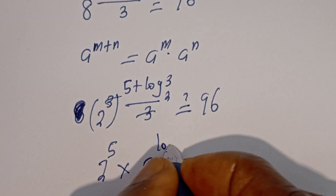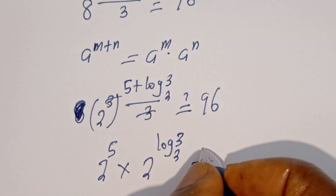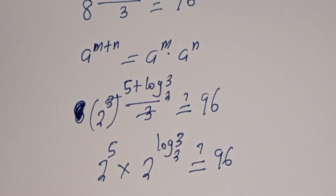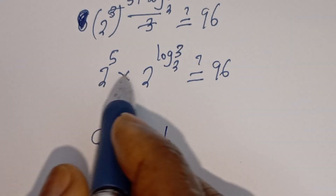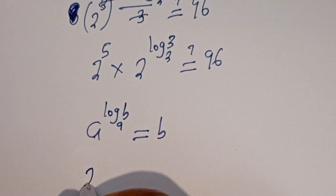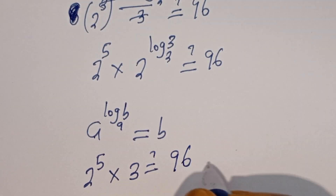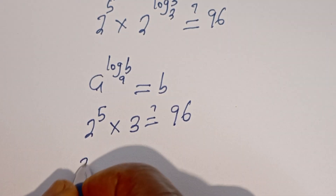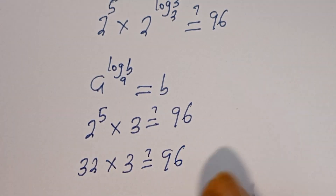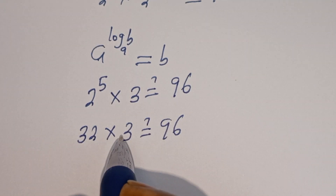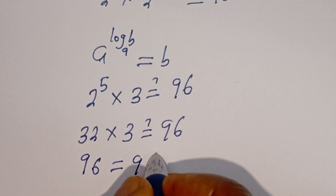Take note that if you have A to the power of log B base A, this is equal to B. This can be written as 2 to the power of 5 divided by 3, multiplied by 3, must be equal to 96. 2 to the power of 5 is 32, multiplied by 3, must equal 96. 32 times 3 is 96, which is true.